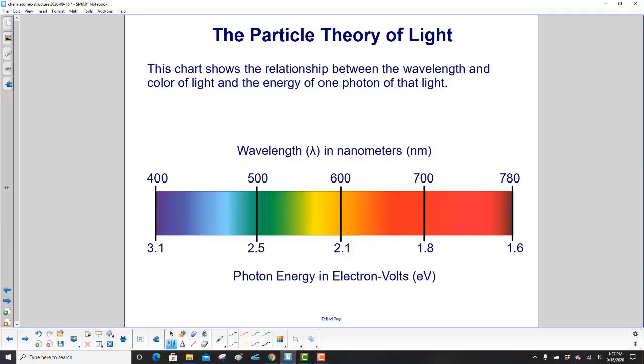The equation from the previous slide is illustrated in this chart. The chart shows the relationship between the wavelength, the color of light, and the energy of one photon of that light. We have our wavelength on the top in nanometers. Nano is 10 to the minus 9. And on the bottom, it shows you the energy of each photon in electron volts. So if you have a wavelength of 600 nanometers, that photon has an energy of 2.1 electron volts.